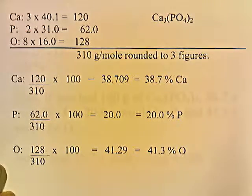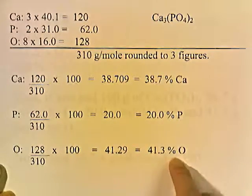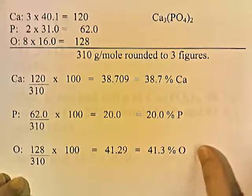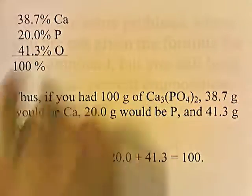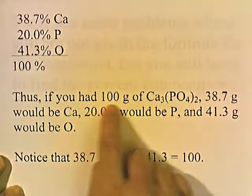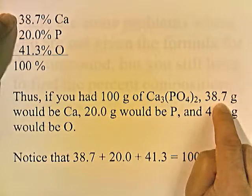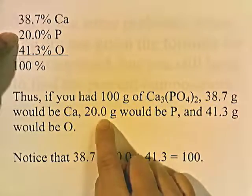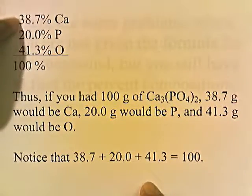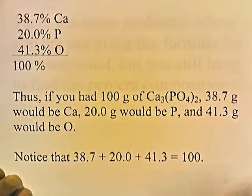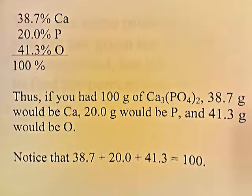So calcium phosphate is 38.7% calcium, 20% phosphorus, and 41.3% oxygen by mass. What this means is that if you had 100 grams of calcium phosphate, 38.7 grams would be calcium, 20 grams would be phosphorus, and 41.3 grams would be oxygen. Notice that the sum of all these numbers adds up to 100. That's all percent composition means — if you had 100 grams of the compound, how many grams of each individual element would you have?